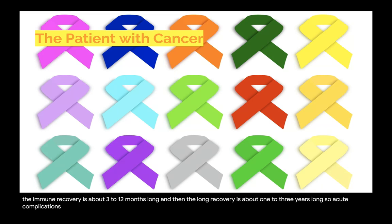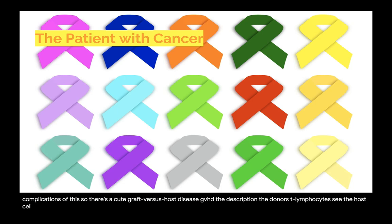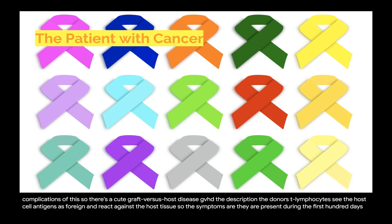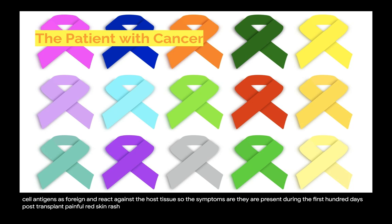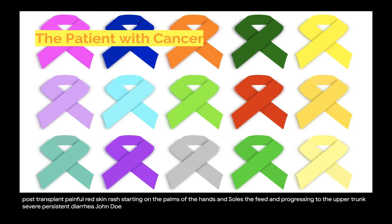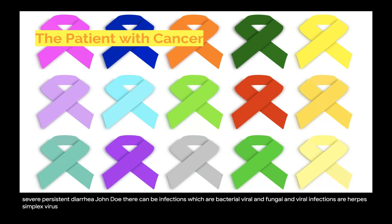Acute complications include acute graft-versus-host disease (GVHD). The donor's T lymphocytes see the host cell antigens as foreign and react against the host tissue. Symptoms are present during the first 100 days post-transplant and include painful red skin rash starting on the palms of the hands and soles of feet progressing to the upper trunk, severe persistent diarrhea, jaundice, elevated liver enzymes, and liver tenderness. Infections can be bacterial, viral — including herpes simplex, varicella zoster, and cytomegalovirus — and fungal, which is Candida albicans.